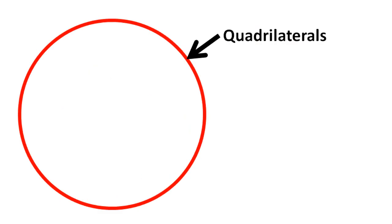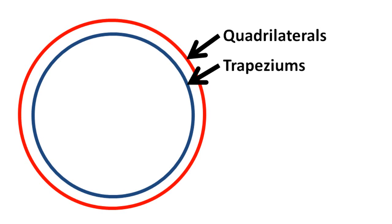Let us look at these families of quadrilaterals in terms of Venn diagrams. At the outside we draw a circle containing the quadrilaterals, then we have the trapeziums. All trapeziums are quadrilaterals but all quadrilaterals are not trapeziums.